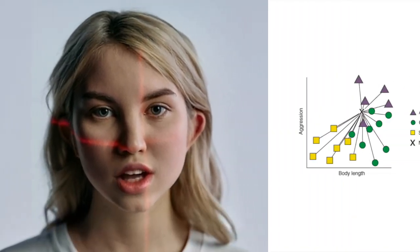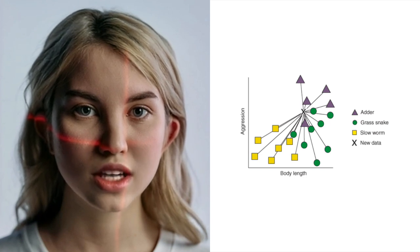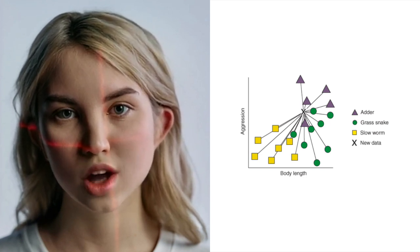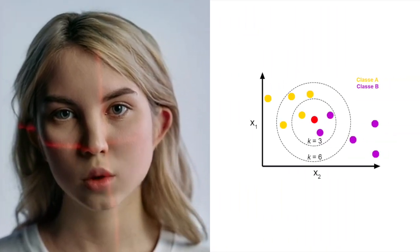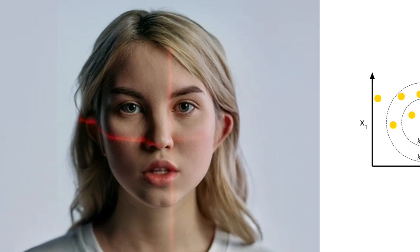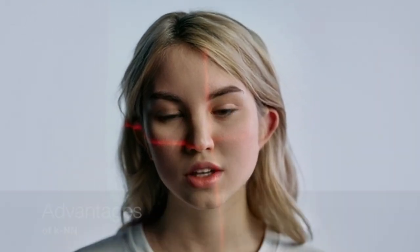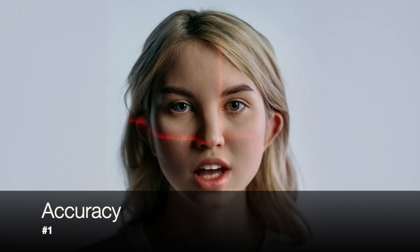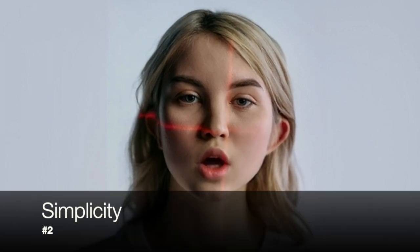Firstly, KNN works by calculating the distance between the query vector and all the vectors in the dataset. The k-nearest neighbors with the smallest distances are then selected as the most similar vectors. Pros of KNN — Accuracy: KNN provides exact results, ensuring the selection of the k-nearest neighbors. Simplicity: the algorithm is relatively simple to implement and understand.